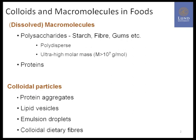In food systems, we typically have a range of different macromolecules present. These can be dissolved macromolecules such as polysaccharides, starch, fibers, gums, etc. These species are typically highly polydispersed because they are natural polymers, and they often contain very high molar mass species — often we talk about ultra-high molar mass, meaning roughly a molar mass above 10 million grams per mole.